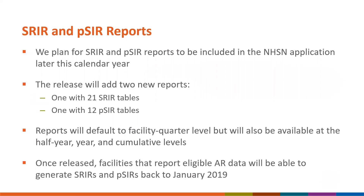We plan for SRIR and PSIR reports to be included in the NHSN application later this calendar year. The release will add two new reports: one for SRIRs with 21 tables, and a separate report for PSIRs with 12 tables. Reports will default to the facility quarter level, but will also be available at the half-year, year, and cumulative levels. Once released, facilities that report eligible AR data will be able to generate both SRIRs and PSIRs back in time to January of 2019.